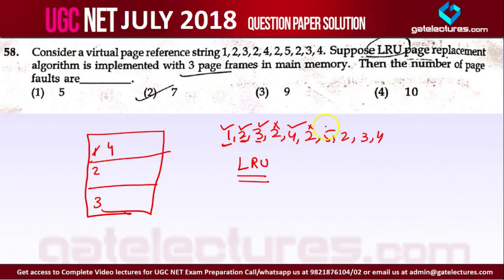5 is not in memory — that is a page fault — and we will replace it with 3, since 4 is used, 2 is used, and 3 is the least recently used now. Then 2 is already in the memory. 3 is not found in main memory, so it is a page fault and 3 will replace 4.